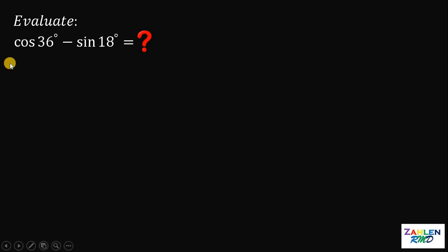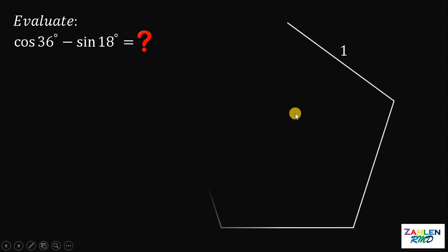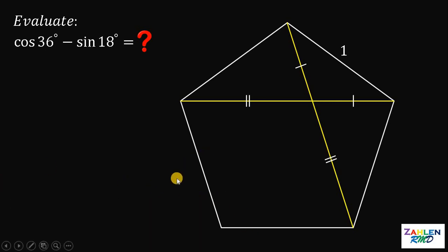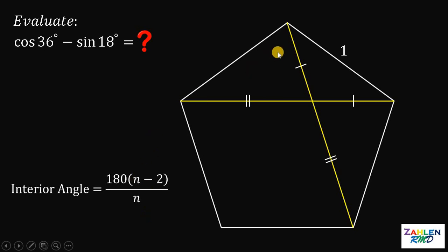Another way to solve cosine 36 degrees minus sine 18 degrees is by using a regular pentagon with a side length of 1. We create two line segments, and notice these two segments are equal, and these two are also equal. The measure of the interior angle of a regular polygon is given by 180 degrees times (n minus 2), divided by n, where n is the number of sides. For a pentagon, n equals 5.